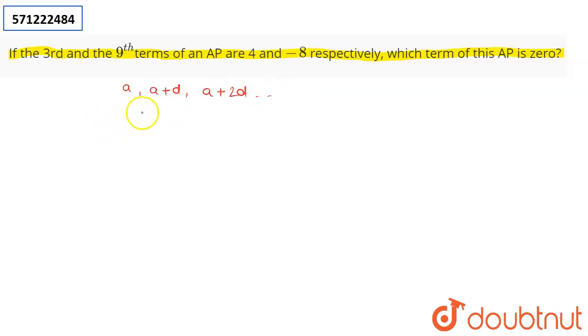The nth term for any AP is given by a + (n - 1) times d.